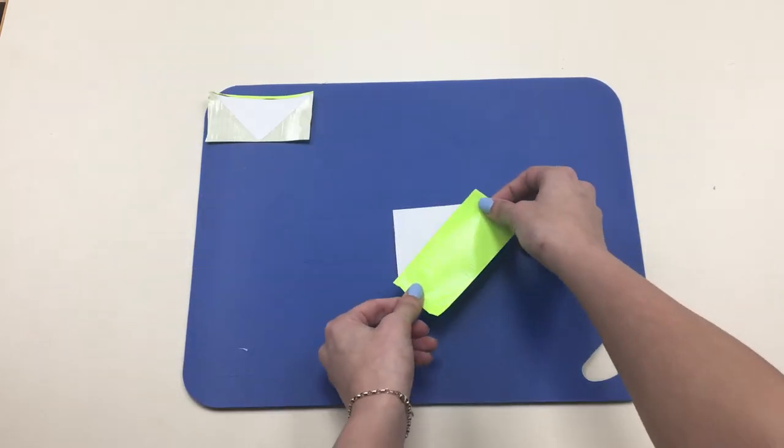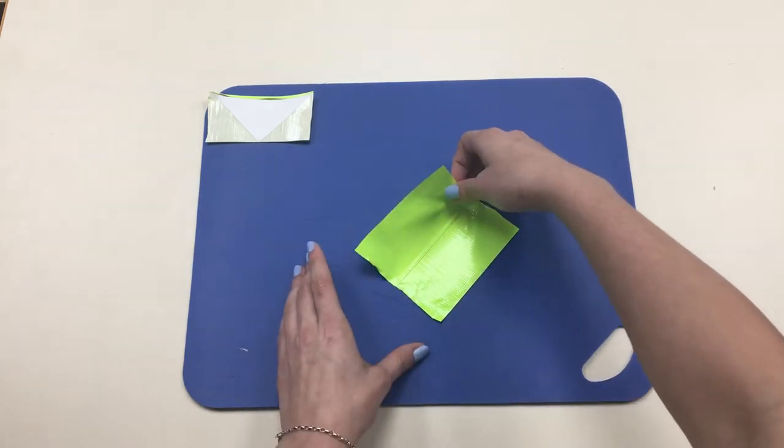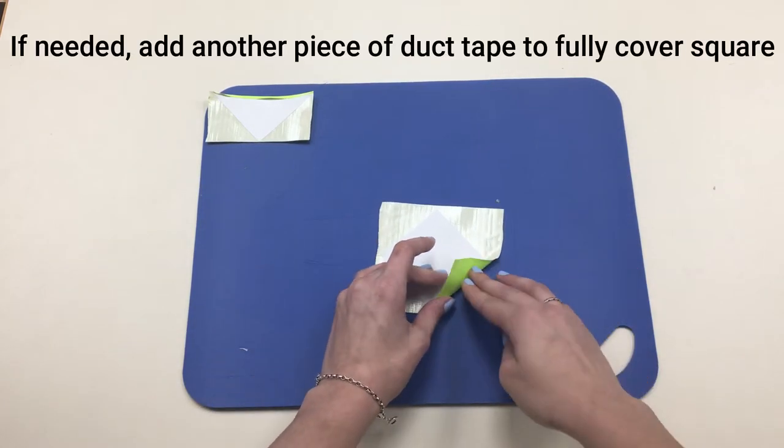We are now going to cover a square using two pieces of duct tape from corner to corner. Turn it around and fold the edges in towards the center to cover our square.